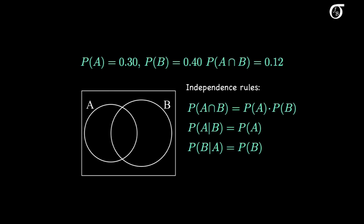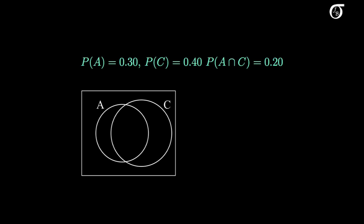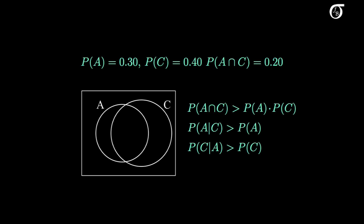We could also make the same argument switching the roles of A and B. Let's contrast that with the dependent case. Suppose we have a very similar situation, except the probability of the intersection is a little bigger. Let's bring in event C, which still has a probability of 0.4 as event B did, but its intersection with A has a probability of 0.2. So here the probability of the intersection is greater than the product of the individual probabilities, and A and C are therefore not independent. In this case, the circles are going to nudge closer together, and the area of the intersection is greater than it would be under independence. Since A and C share more ground, the conditional probability of A given C is greater than the probability of A, and similarly the conditional probability of C given A is greater than the probability of C.